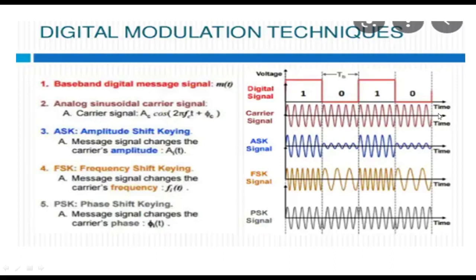So, to change the carrier signal based on digital pulses: the first technique is amplitude shift keying, where one amplitude is assigned for 1 and another amplitude for 0. Frequency shift keying: one frequency for 1 and another frequency for 0. Phase shift keying: one phase for information 1 and another phase for information 0. These are the basic types of digital modulation techniques: ASK, FSK, and PSK. In PSK, we can define a wider area — for example, different phases like 0 and 180. So you can divide it like 0 and 1; this is called BPSK — binary phase shift keying.